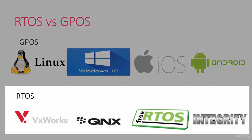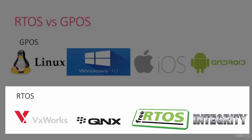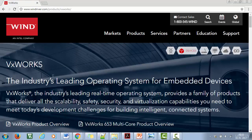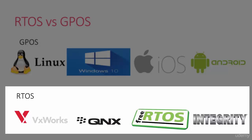Some examples of real-time operating systems are: VxWorks, which is basically from a company called Wind River, acquired by Intel around maybe 10 years ago. It is widely used in the fields of safety, security, IoT, etc. VxWorks is proprietary software and you need to have a license to use it in your applications. It is one of the most famous real-time operating systems used for embedded applications.